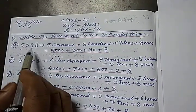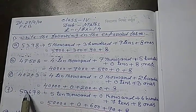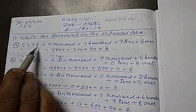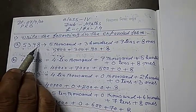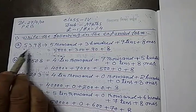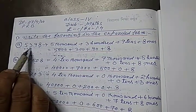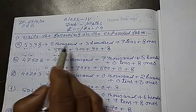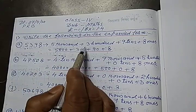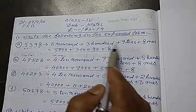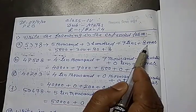Students, you are given some numbers A, B, C, D — notice carefully. This number is to be expanded as per their place values. This number is 5,398. So first of all, we will write it in words: 5,000 plus 300 plus 90 plus 8 ones. Correct?